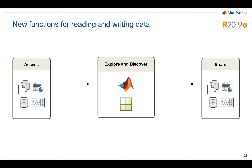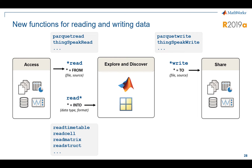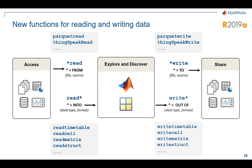What about reading and writing data? In MATLAB we're continuing to add to this capability. In the past, you had things for where data was coming from and where data was going to — examples being things like XLS read and XLS write, or CSV read and CSV write. Some of the newer things include Parquet read and ThingSpeak read and then the corresponding write functionality. We've also added a family of functions that we call read-star and write-star. This has to do with wanting to read something into MATLAB as a timetable or as a matrix, or maybe write something out as a cell or as a struct. So we've added a family of complementary functions around this idea of reading data in and writing data out.